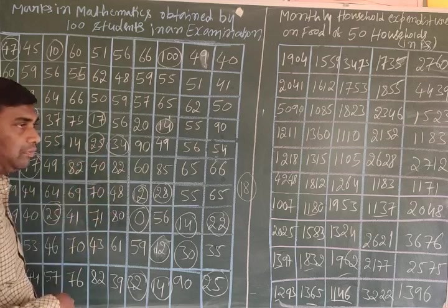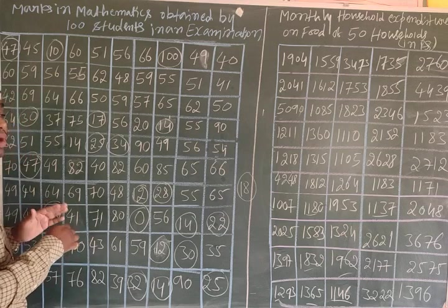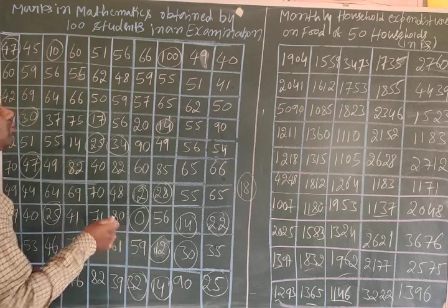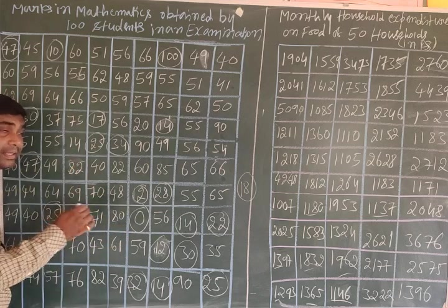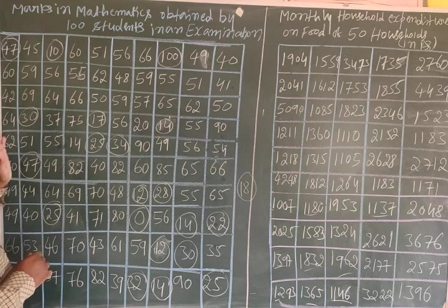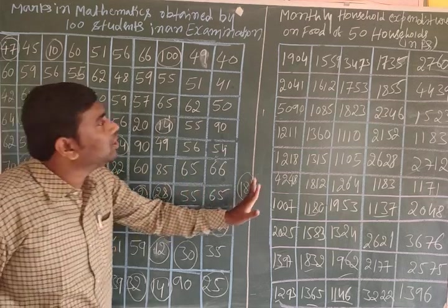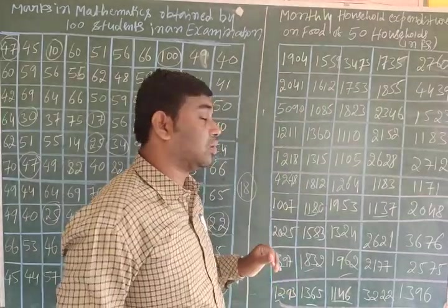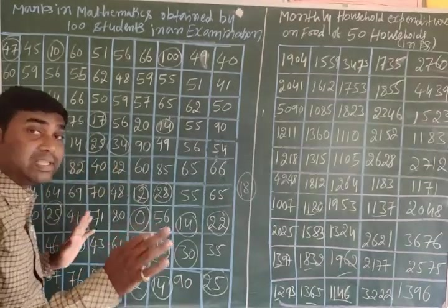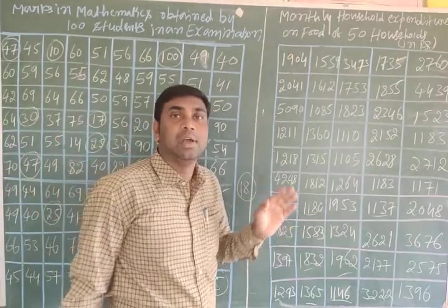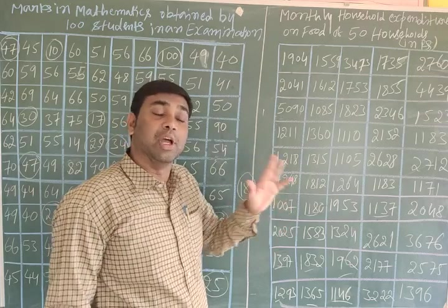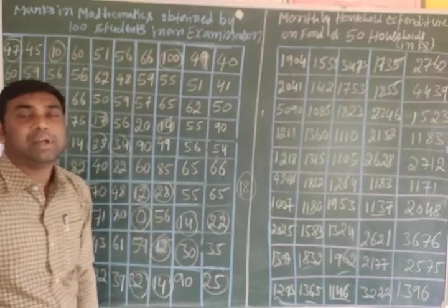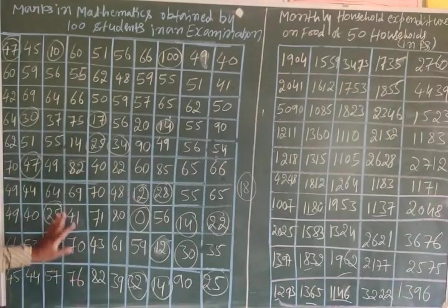Organization of data is very important to understand which households spend less, more, or at a middle level, and how many are above or below a certain threshold. From this table in its raw form it is highly impossible to explain anything. To understand this we have to make a frequency distribution — we have to arrange data in a proper way. We will discuss frequency distribution in the next class.